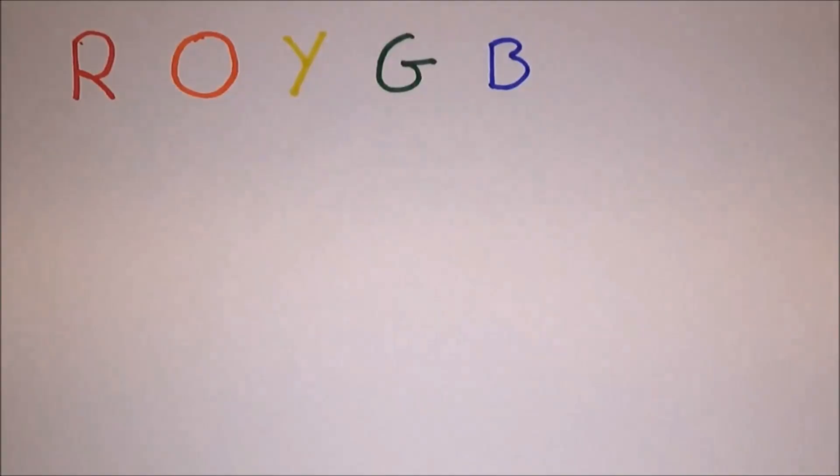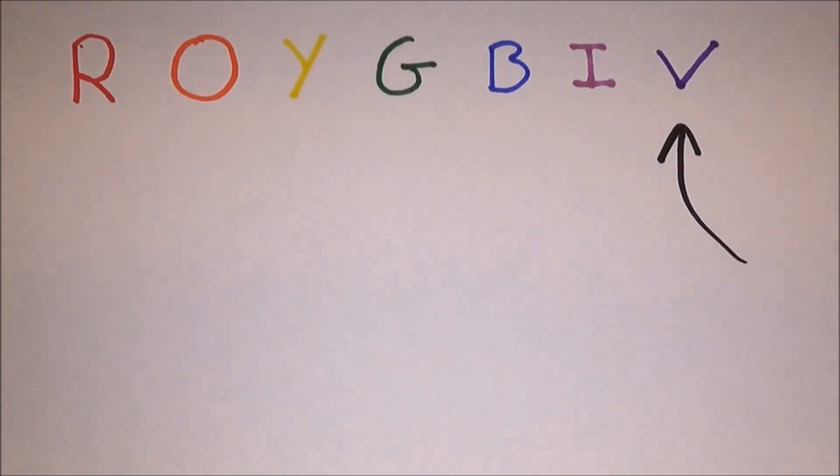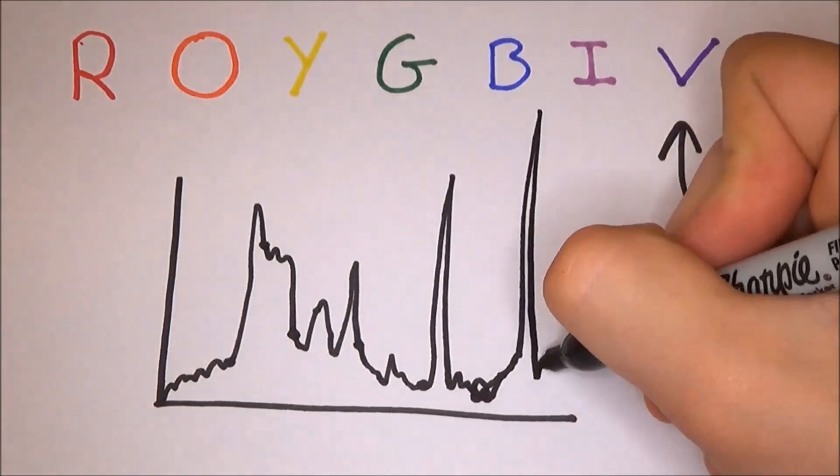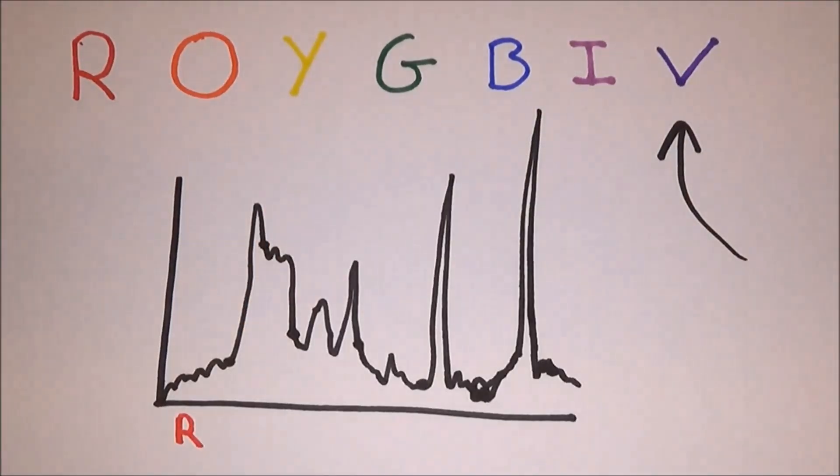But let's look at the colour spectrum. If the shorter wavelengths are scattered more strongly, why isn't the sky violet? The emission spectrum of the sun, however, is inconsistent over all wavelengths, so less violet light is actually emitted.